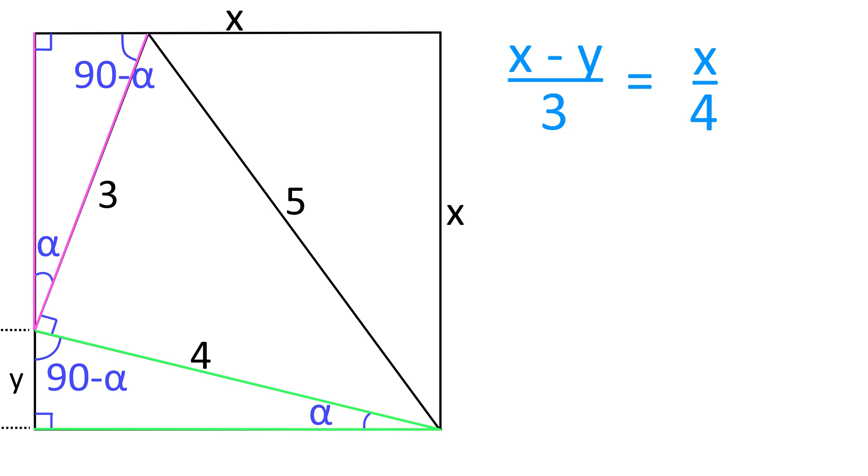If we put the 3 and 4 on the opposite sides, after a simple rearrangement, we have y is a quarter of x.